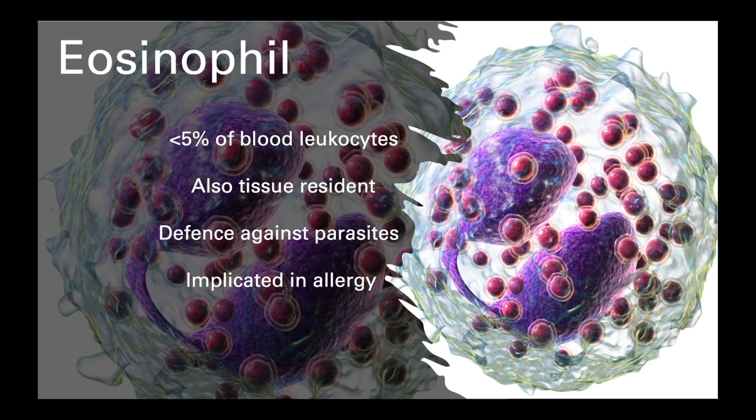Eosinophils are a much rarer type of granulocyte, with less than 5% of the circulating leukocytes being eosinophils. They can also be tissue-resident, where they help maintain tissue homeostasis. Levels of eosinophils will be higher in individuals who are or have recently suffered from a parasitic infection, as that is what these cells are primarily responsible for defending us against. But they are also implicated in the allergic response, so will be elevated there too.